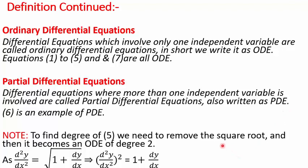Coming back to example 5, which has a square root: we square both sides to get (d²y/dx²)² = 1 + dy/dx. Now the order of this differential equation is 2 and the degree is also 2.